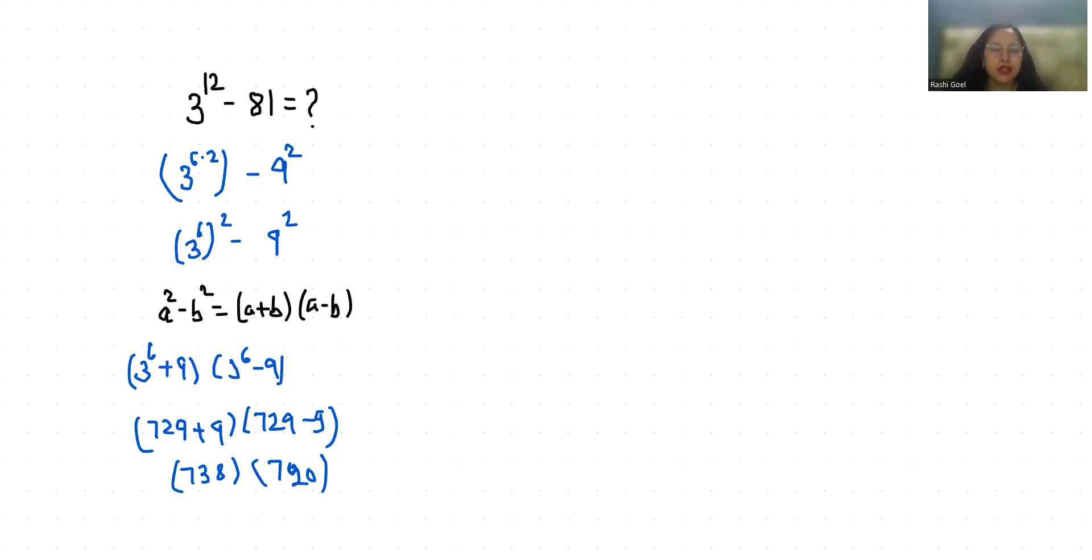It becomes 7 times 7 is 49,000. 7 times 2 is 14,130.